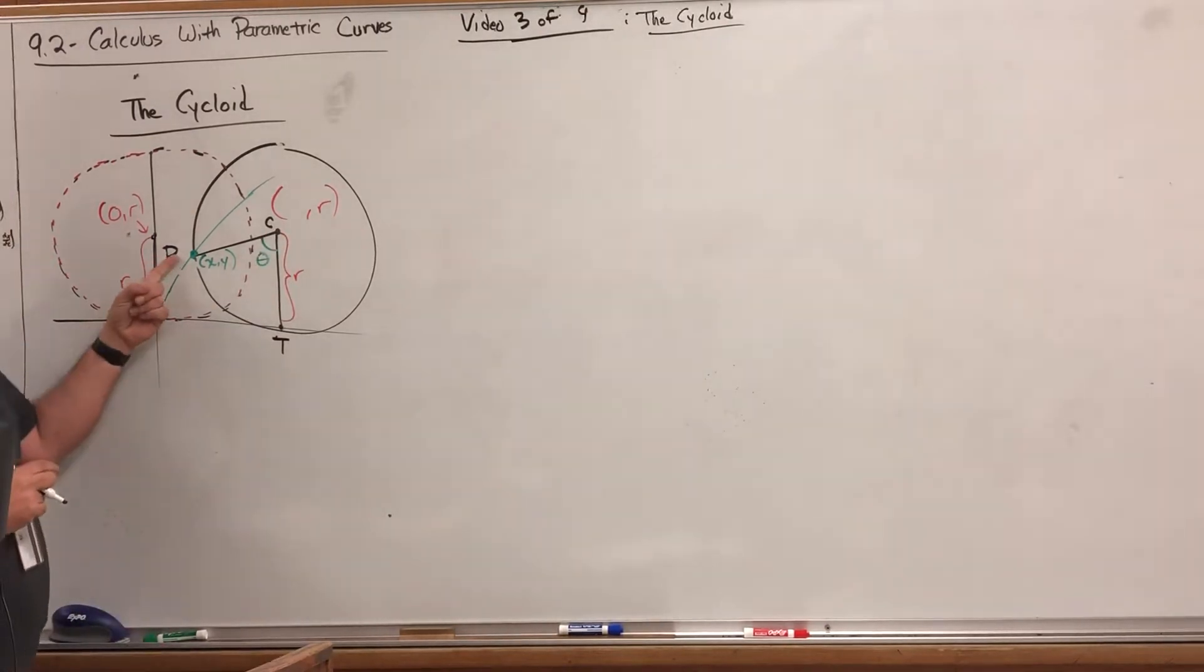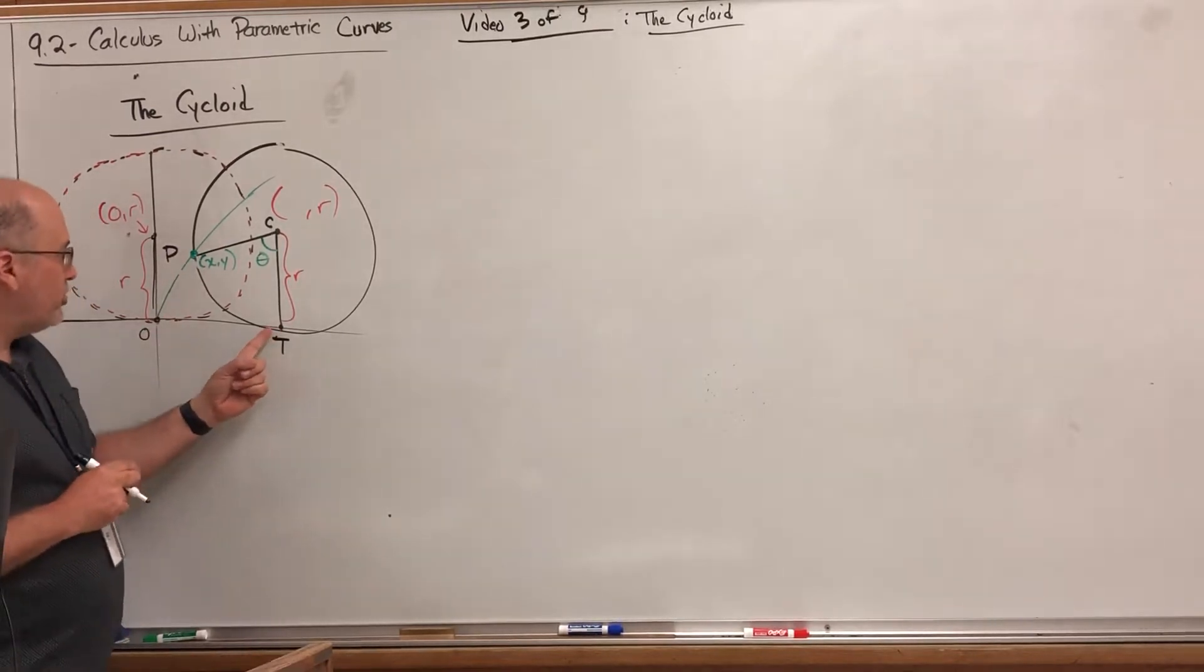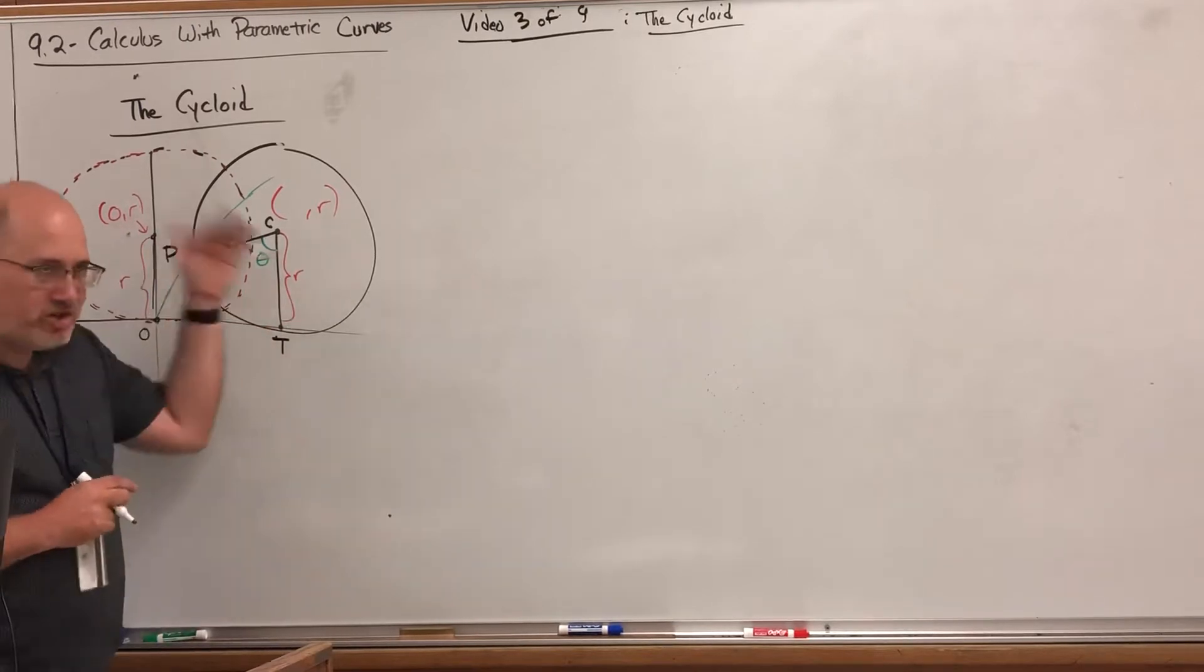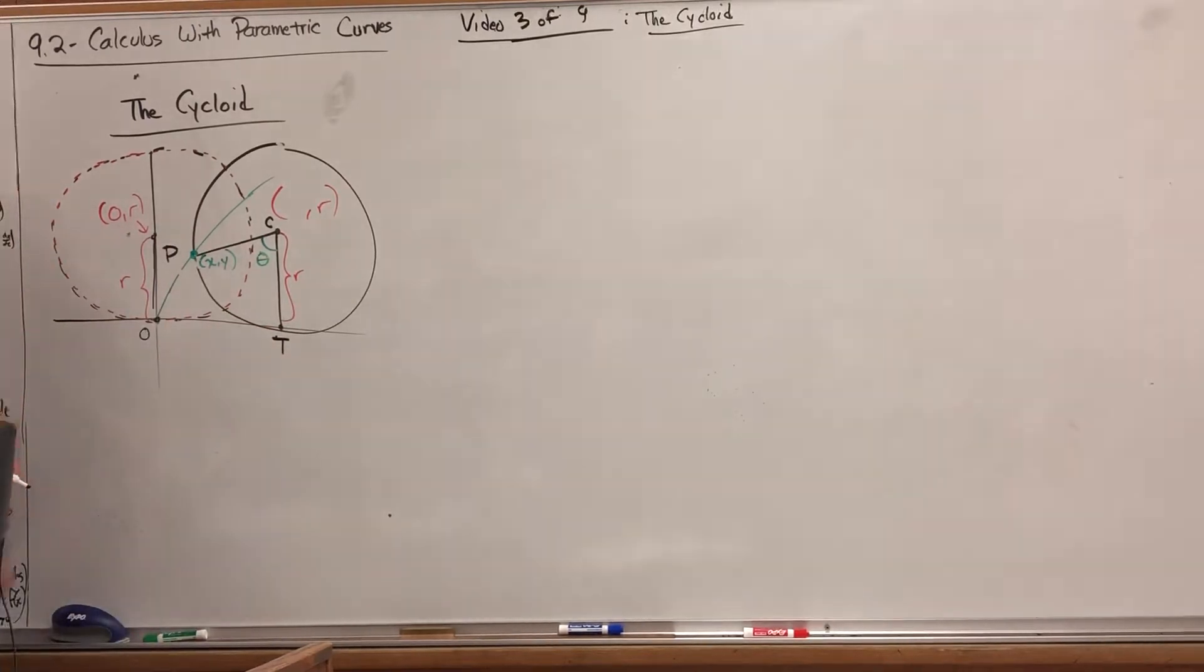The green arc represents the path that the circle is taking. I've called the center of the circle C, the point on the circle that was originally at the origin P, the origin O, and the point on the circle where it's tangent to the x-axis T—and that will change as we rotate.